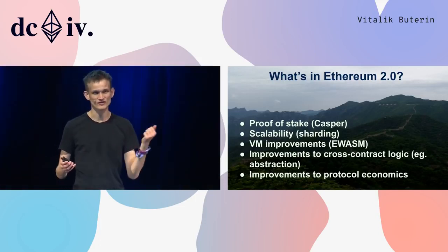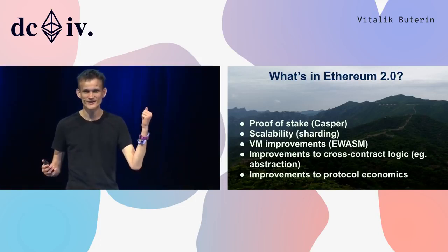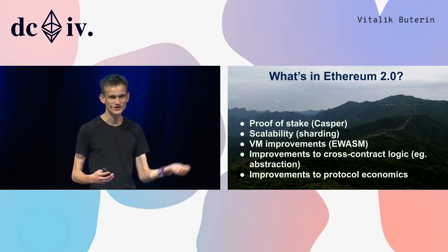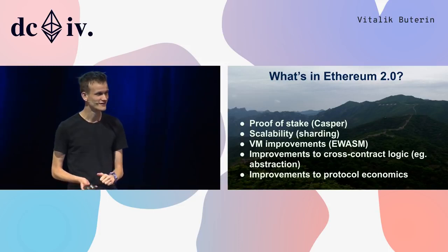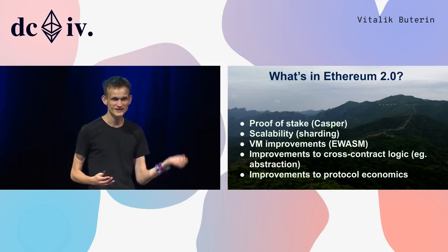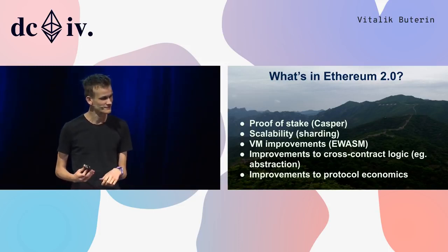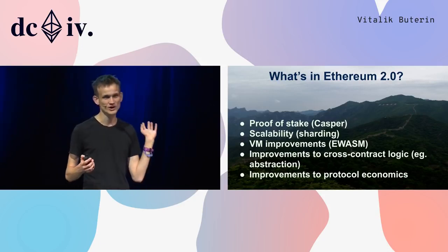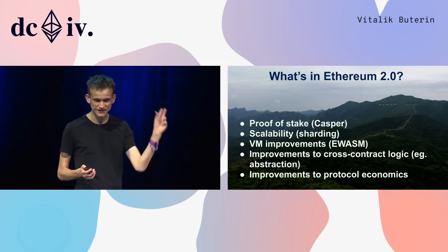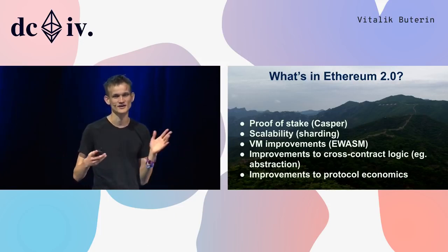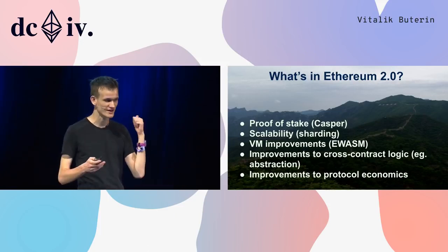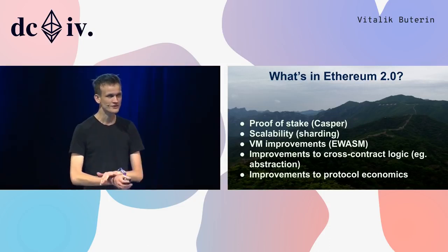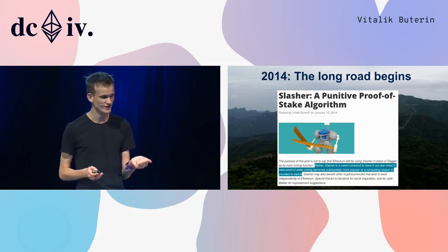These features include proof of stake, Casper, scalability, sharding, virtual machine improvements, ewasm, improvements to cross-shard contract logic, improvements to protocol economics, and really the list goes on and on. There is some power law distribution, so lots of great stuff. Now how did we get here? The road to proof of stake actually started way back in 2014.